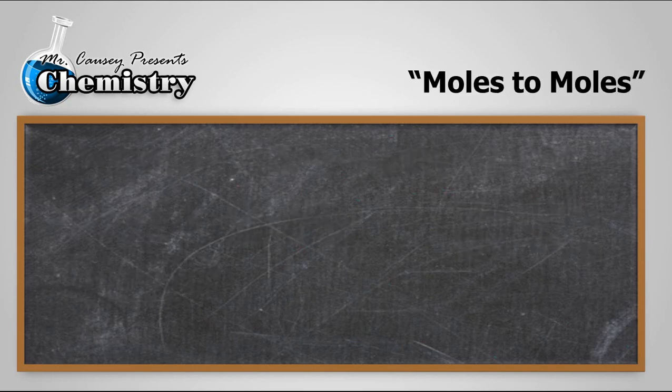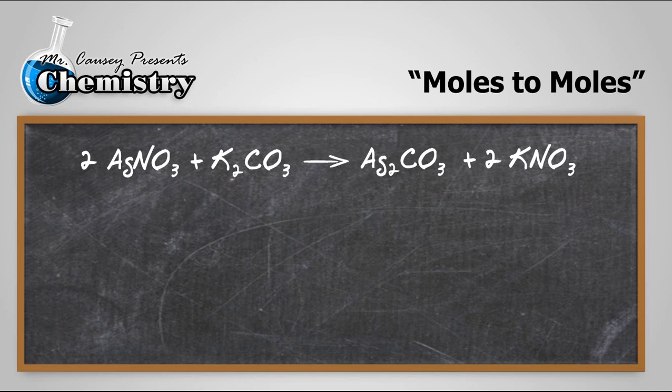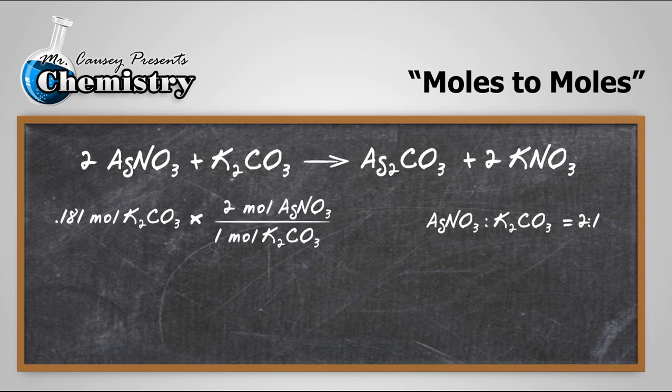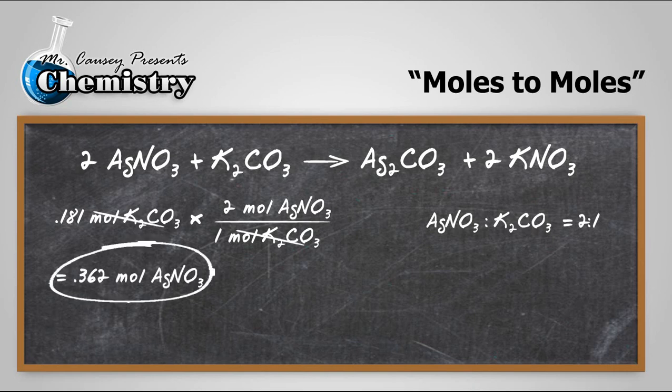So let's take our moles and change moles of potassium carbonate to moles of silver nitrate. And there's a ratio to remind us, 0.181 moles of potassium carbonate times 2 to 1, and the potassium carbonate will cancel out, and we'll multiply by 2 moles, and we get 0.362 moles of silver nitrate.